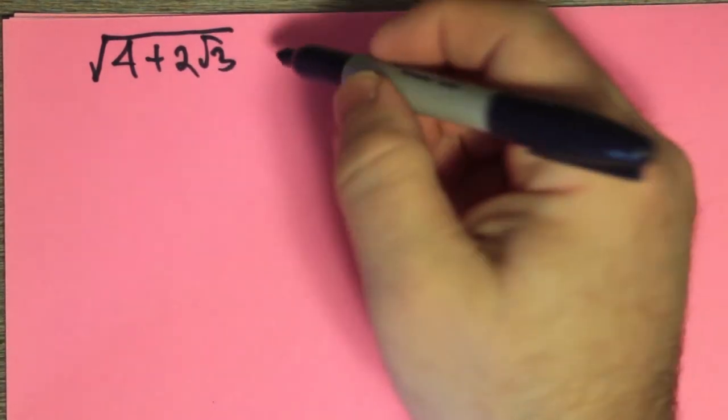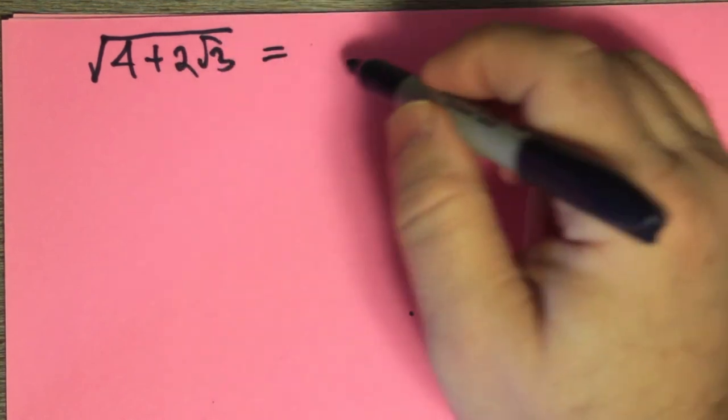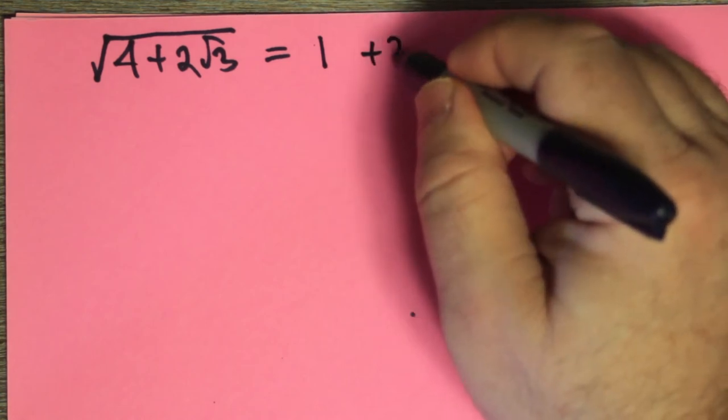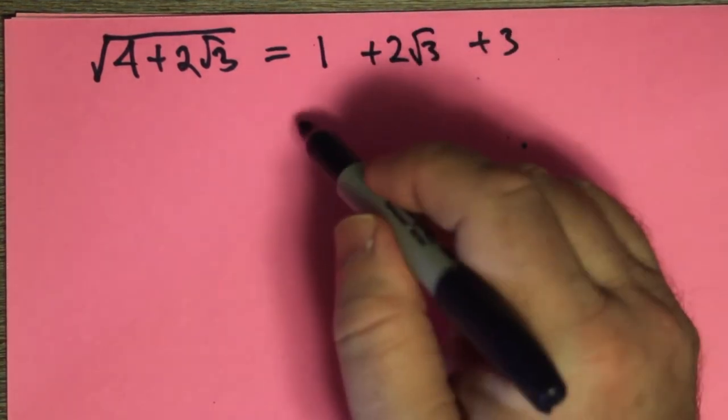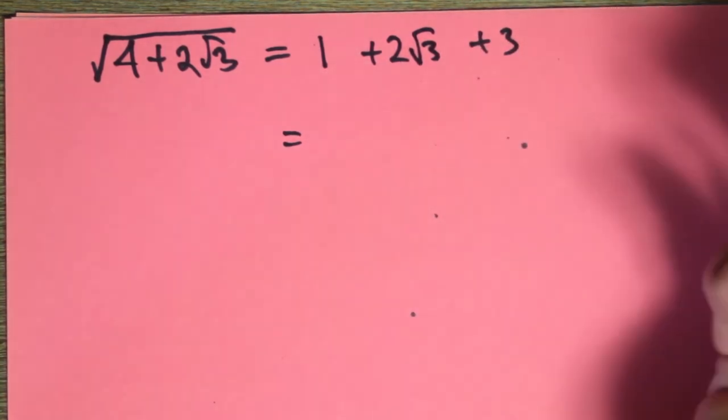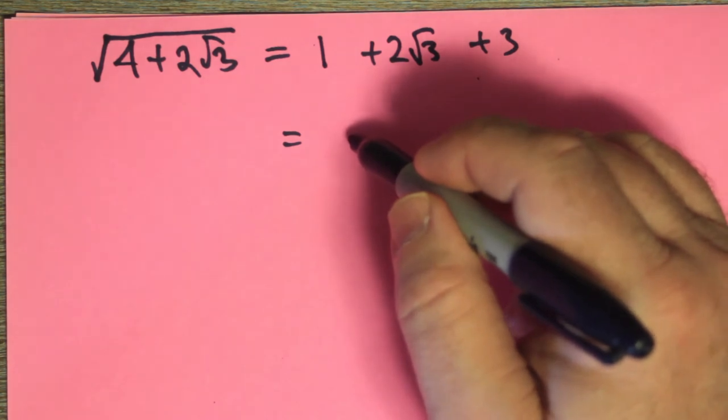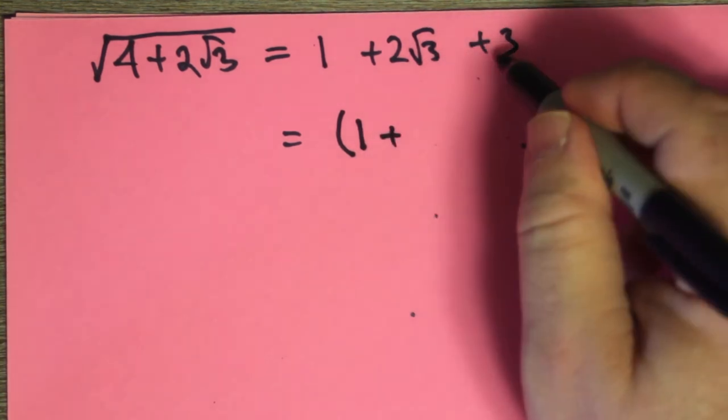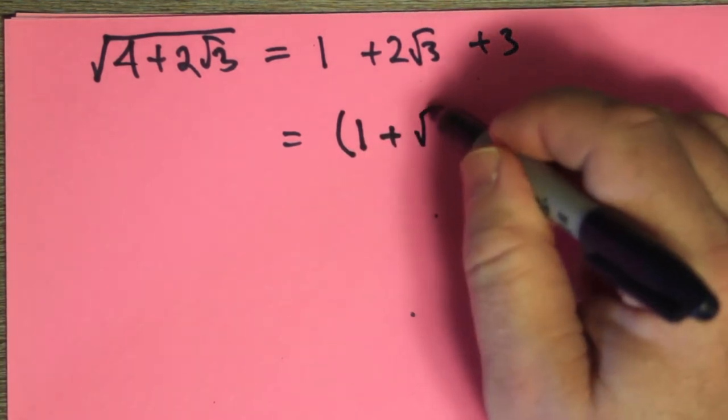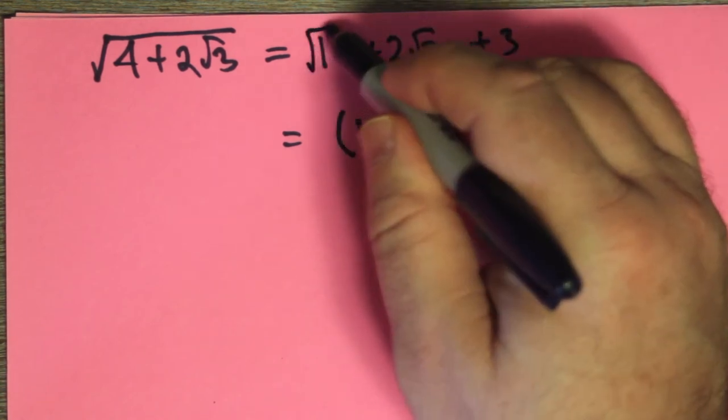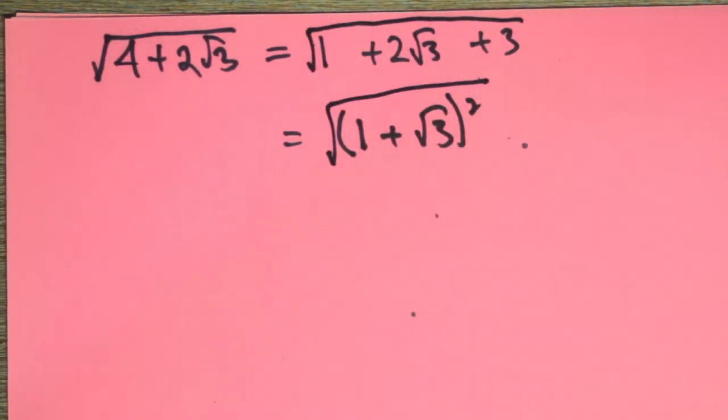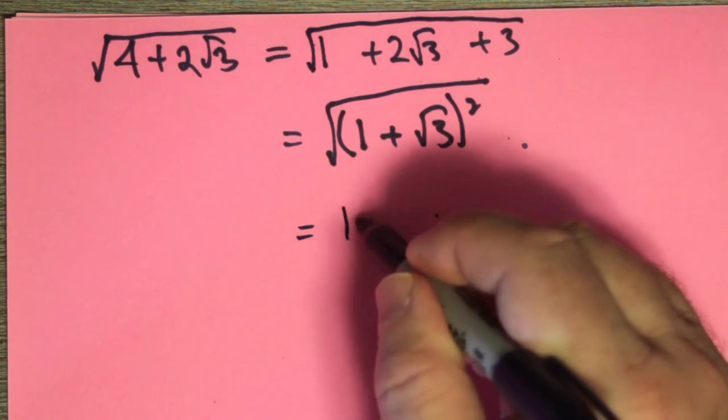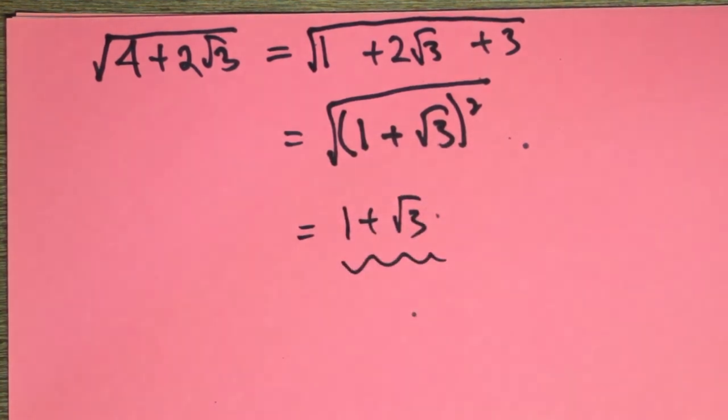All right, here's another one. 4 plus 2 root 3. And I'm breaking up the 4 into a 1 and a 3. Everything is plus, so the 2 root 3 just goes in the middle. And I pretend this is a perfect square, which it kind of is, because 1 squared is 1. So if I make this a perfect square, we got 1 plus the square root of this number, which is root 3. And I say squared. So these are all equal. The square root of a square is whatever is inside the bracket. So it's just 1 plus root 3. And there's your answer there.